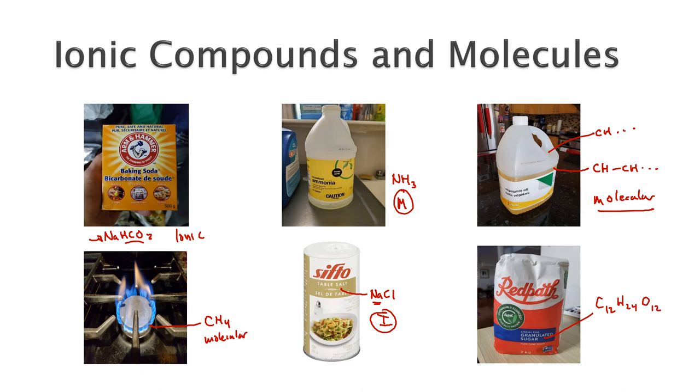Again, this is a molecule. You can see right away that our ionic representatives here are these nice crystals or powders, whereas the molecules have a range—we have a gas, solutions, oil, and a solid with the sugar. It's more of a range when it comes to molecules.